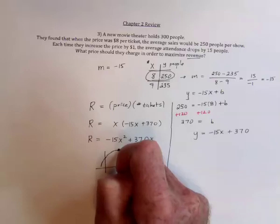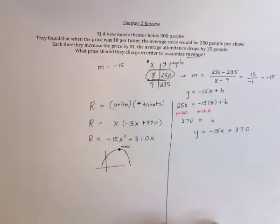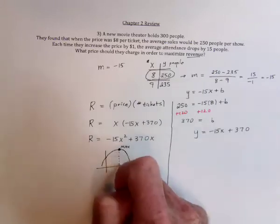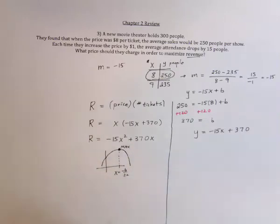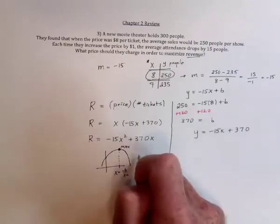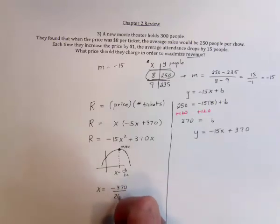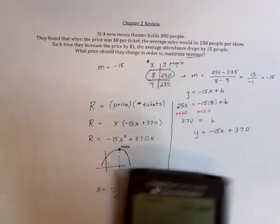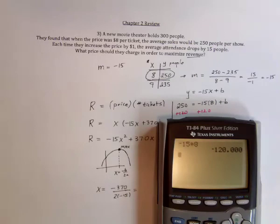And so we just need to find out the vertex of the parabola, which will be the maximum. And we can use the shortcut formula that the X is going to be negative B over 2A to find the maximum. So X is going to be negative 370 divided by 2 times the A. So that's going to be negative 370 divided by negative 30.